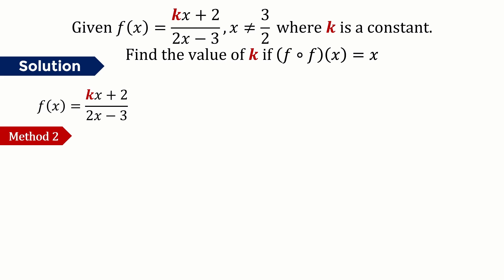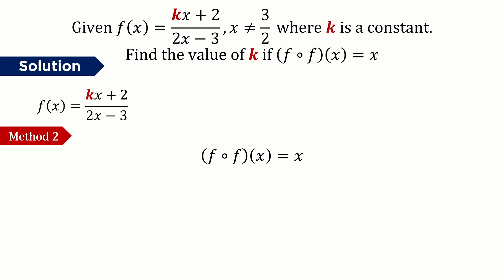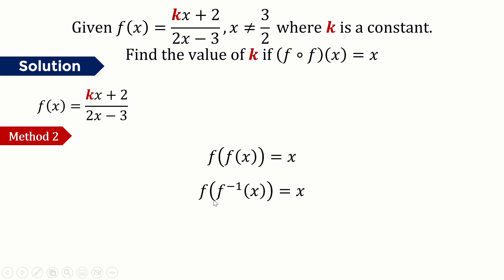For the second method to find the value of k: we have f(f(x)) = x, which means f∘f = x. This is only possible if f is composed with its own inverse, so f(x) = f⁻¹(x).